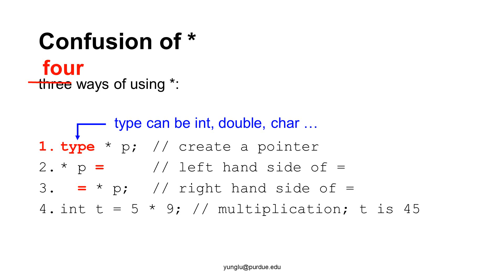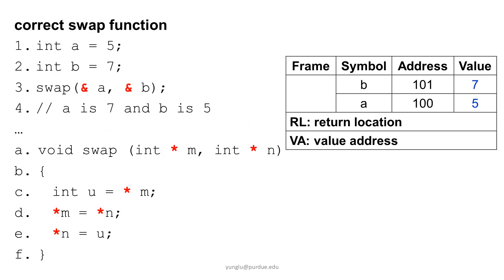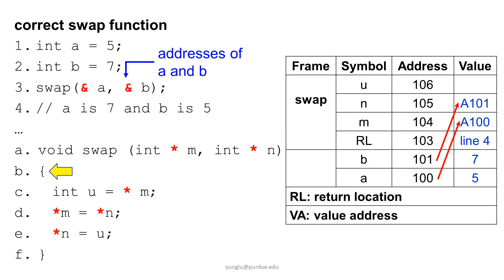In the fourth case, integer t is 5 times 9, which is 45. Now, let's consider how to write the swap function correctly. The swap function cannot see 'i' and 'b' directly. Instead, we pass their addresses to the swap function. The arguments 'm' and 'n' are pointers because they have asterisks in front of them. Calling swap uses the addresses of 'i' and 'b' by adding '&' in front of them. This is what the stack memory looks like just after entering the function. The value of m is 100 because that is the address of i. The value of n is 101 because that is the address of b.